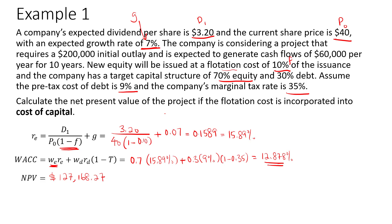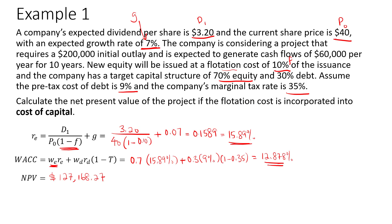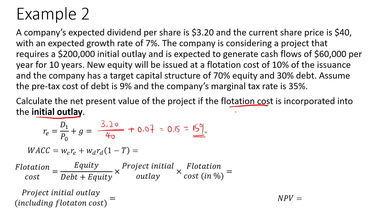Now for approach 2, we factor the flotation cost into the project's initial outlay. For the cost of equity, we drop the flotation cost and use the same formula as internally generated equity: $3.20 divided by $40 plus 7%, which gives 0.15 or 15%. This is lower than the 15.89% from approach 1, where the extra increment factored in the flotation cost. For WACC, we take 0.7 times 15% plus 0.3 times 9% times 1 minus 0.35, which equals 12.255%.